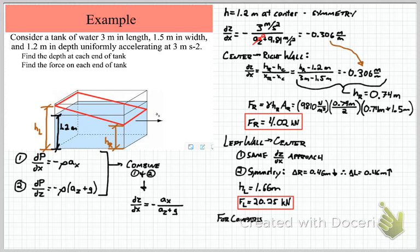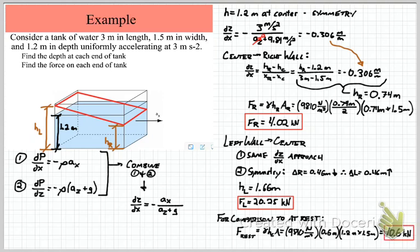And for comparison, I also wanted to just calculate what this would be at rest, and using our standard hydrostatic force equation, I came up with a value of 10.6 kilonewtons that would have been acting on either side of the tank when the fluid was at rest. So by accelerating that tank, we've doubled the maximum force that the left hand side is going to feel, and we've significantly reduced the forces on the right hand side.